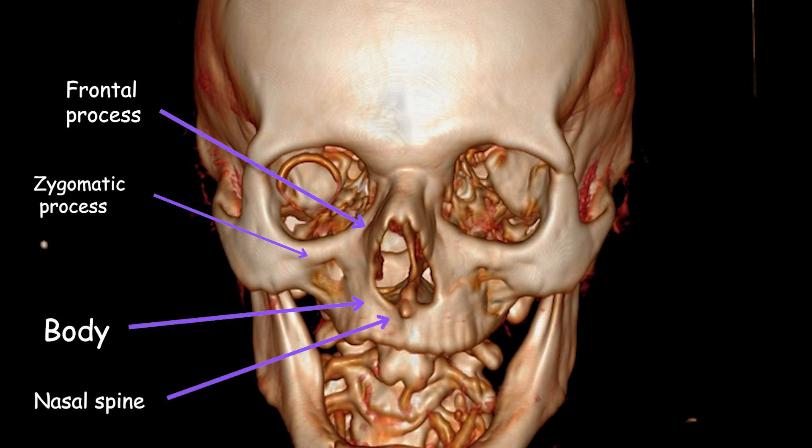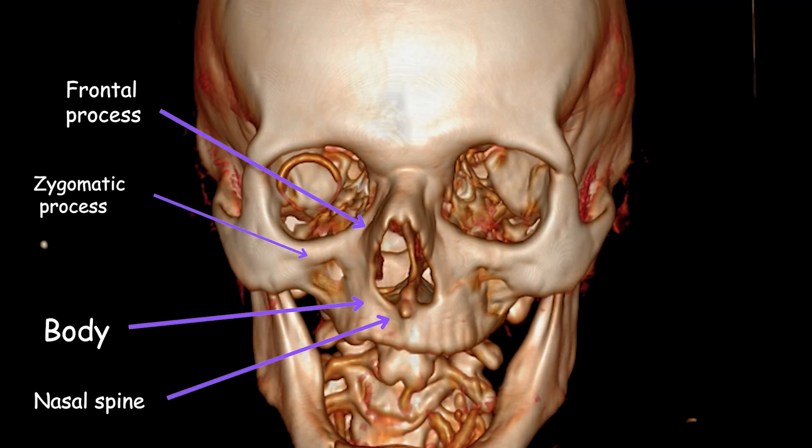The nasal spine is a bony projection located at the midline of the maxilla. It provides structural support and stability to the nasal region, helping to anchor the nasal bones and maintain the shape and alignment of the nasal pyramid. The infraorbital foramen is a small opening or hole in the maxilla, typically oval-shaped, situated on a slightly raised area known as the infraorbital crest or ridge. It plays a vital role in providing innervation and blood supply to the lower eyelid, cheek, upper lip, and surrounding facial structures.